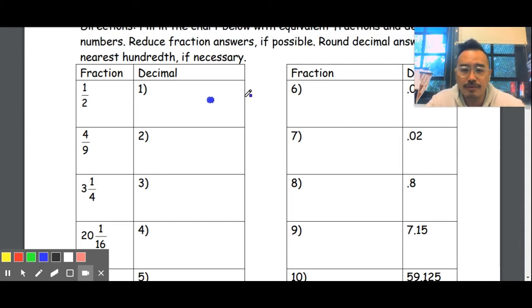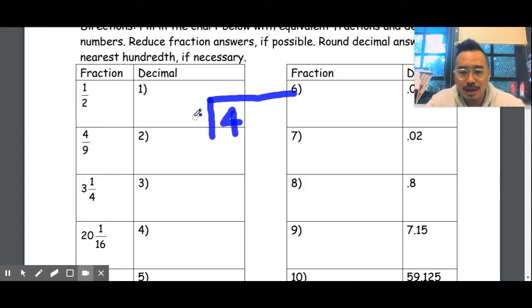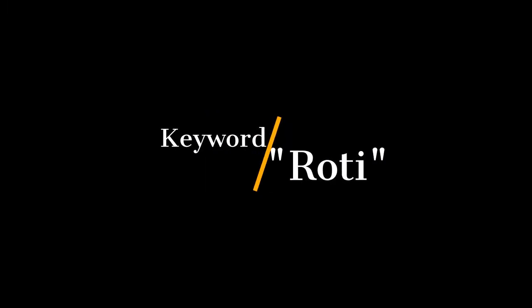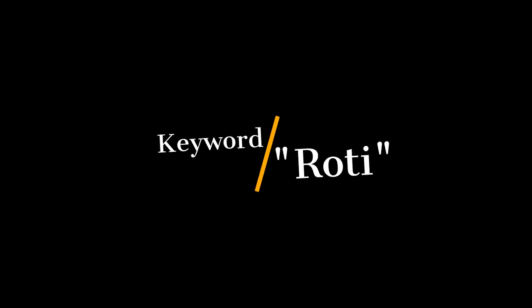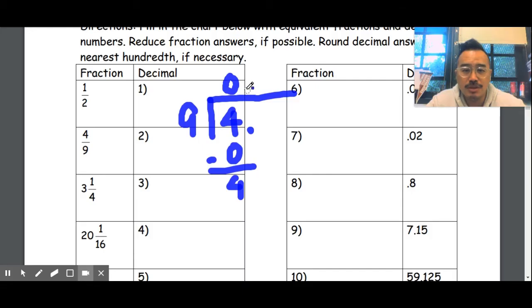All right. Now four ninths, so four inside, nine outside. So nine doesn't go to four, so that's zero times. That's four. Now we are admitting that nine doesn't go to four, so it's going to be a part of a whole, which means it's either fractured from decimals. We're at zero.